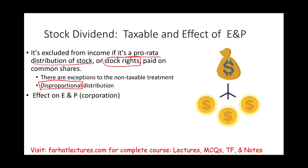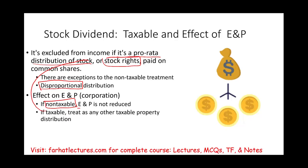What about the effect on the corporation's earnings and profits? If the distribution is not taxable — meaning it's proportional — we don't reduce earnings and profits. If it is taxable, we treat it like any other taxable property distribution, which was discussed in a separate recording.